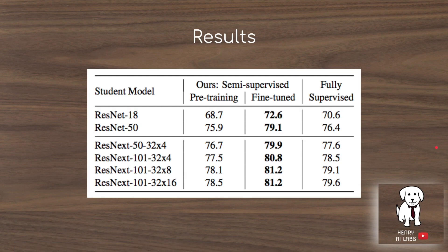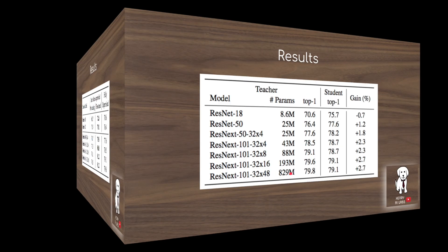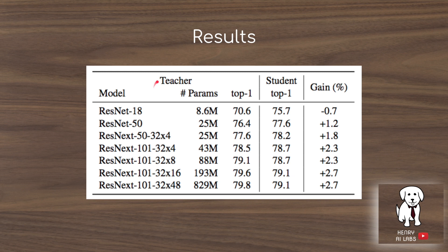The first set of results shows the success of the semi-supervised learning framework across different student models — ResNet-18, ResNet-50, and higher capacity ResNeXt variants. The fine-tuned semi-supervised learning framework always outperforms the fully supervised learning task when you just train the student model on ImageNet classification. They then show how increasing the capacity of the teacher model increases the accuracy of the student model, with gains increasing each time as teacher capacity scales up while holding the student constant.